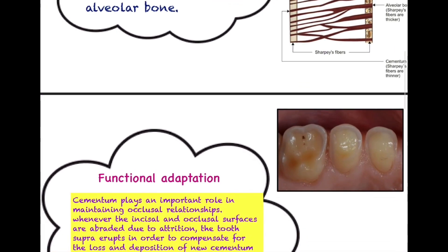Due to this continuous wear and tear, if there is subsequent attrition in the mandibular teeth, the total height of the tooth will become less over time. The maxillary teeth need to supra-erupt so that the occlusal relationship can be established once again for proper chewing — there must be proper tooth contact. Without any tooth-to-tooth contact, a person cannot chew properly. If mandibular teeth are wearing at a faster rate, there will come a point when there is no occlusal contact between the maxillary and mandibular teeth.